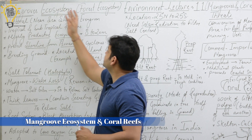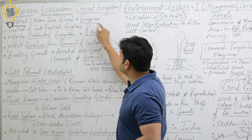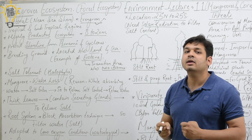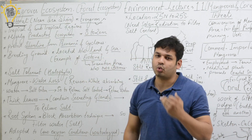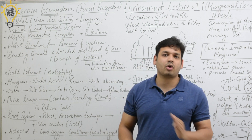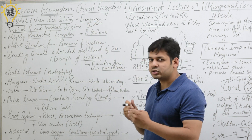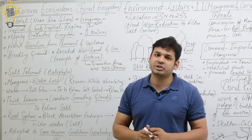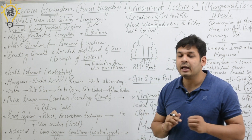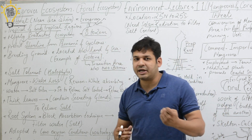Mangrove is a forest ecosystem — it is an evergreen forest. They are found near the seashore and are located in the tropical and subtropical regions. Mangroves are a highly productive ecosystem, and the trees here are of a height of 8 to 20 meters. Remember: 8 to 20 meters.